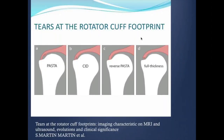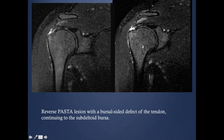There is special terminology used for the insertional part of the tear. Most tears occur 1 to 1.5 centimeters from the insertion, but some occur at the footprint or insertion. PASTA refers to partial articular surface tear at the insertion. Reverse PASTA is the bursal surface equivalent, also called SED. You can often see intrasubstance changes with cystic formation at the insertion. This example shows a high-grade bursal surface partial thickness tear with the articular fibers still intact — the reverse PASTA.